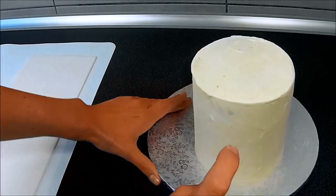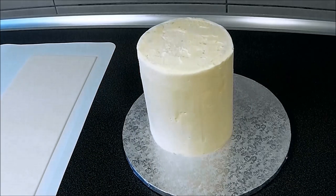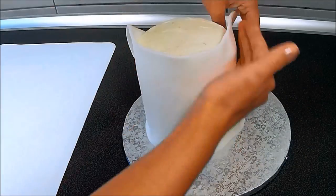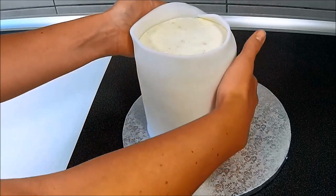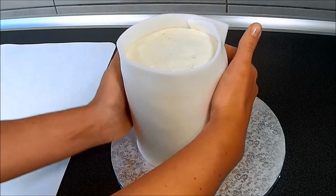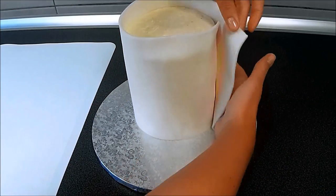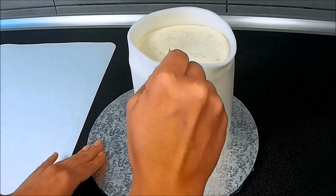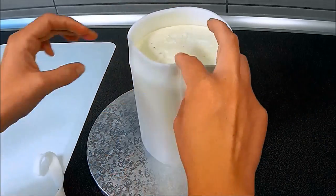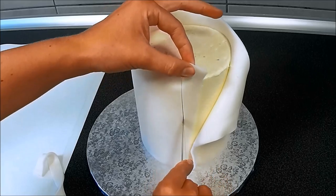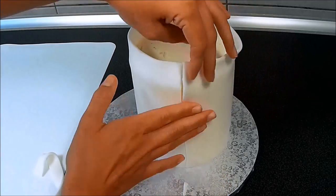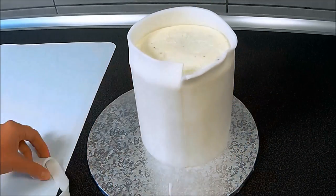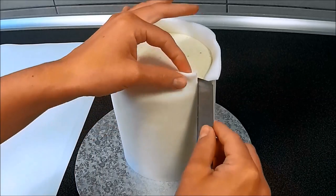Spraying my cake with some water so the fondant will stick to it better, and now I'm attaching the fondant to the cake. I'm cutting off the excess fondant on the back of the cake and cutting off the extra fondant on the top of the cake.